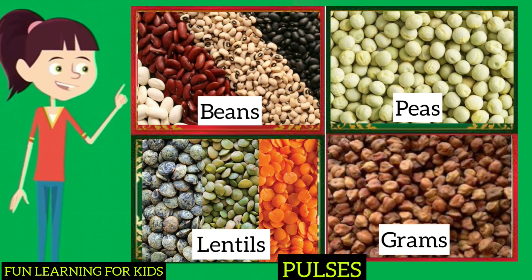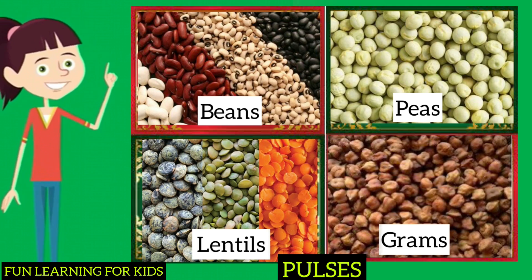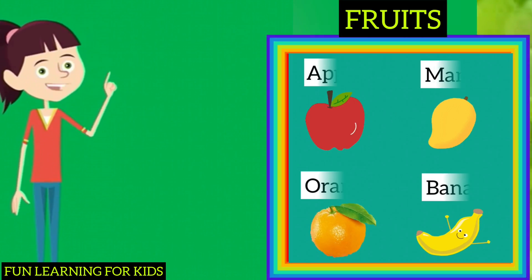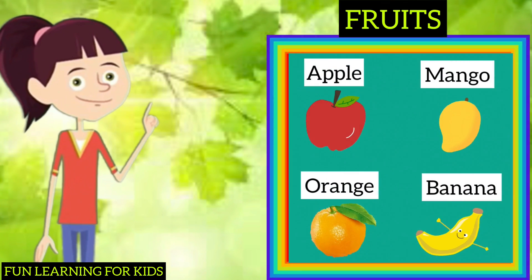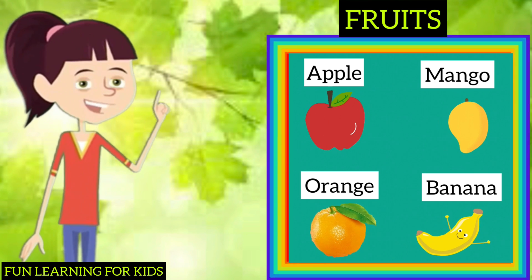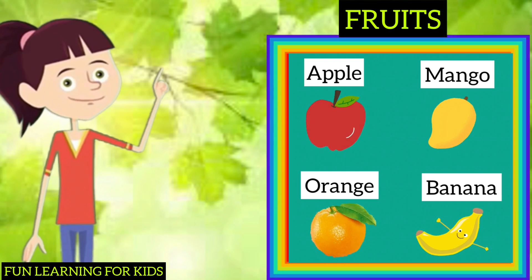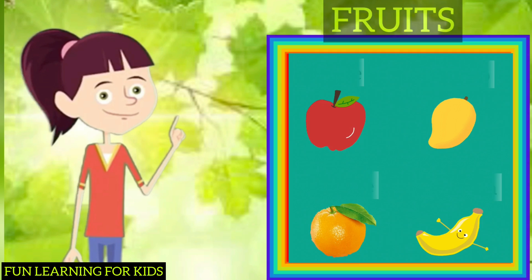Beans, peas, lentils, and grams are pulses. Apple, mango, orange, and banana are fruits.